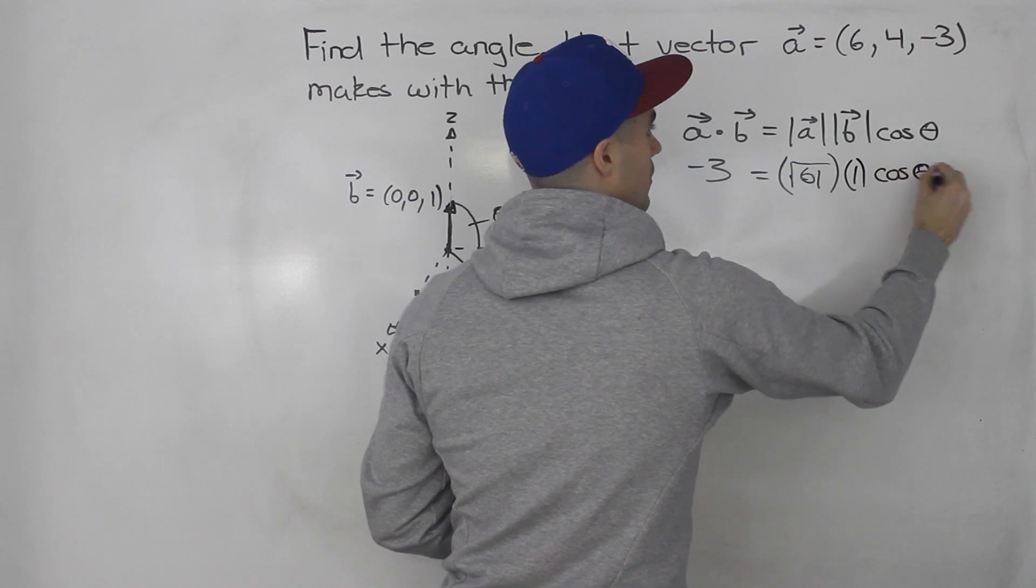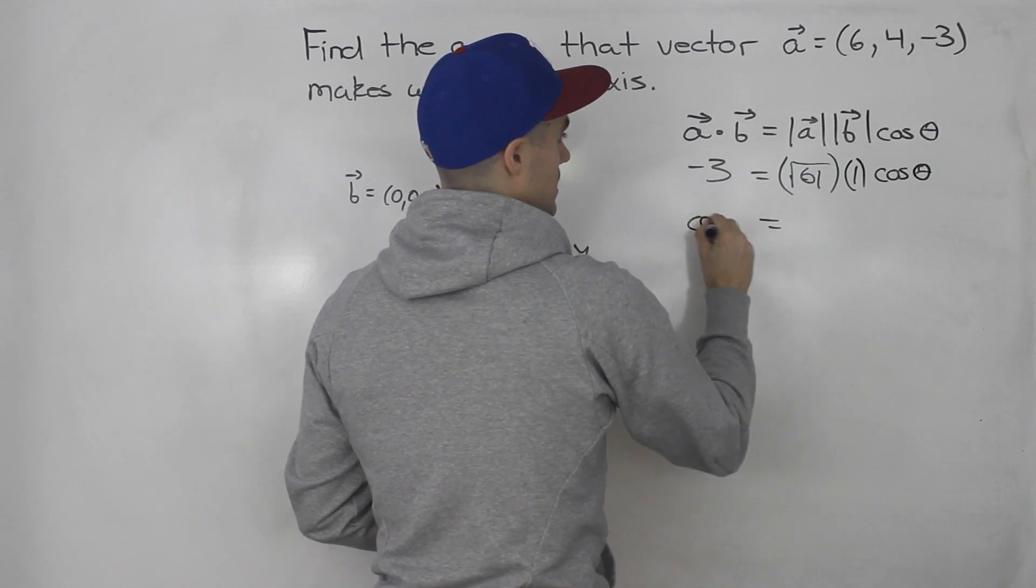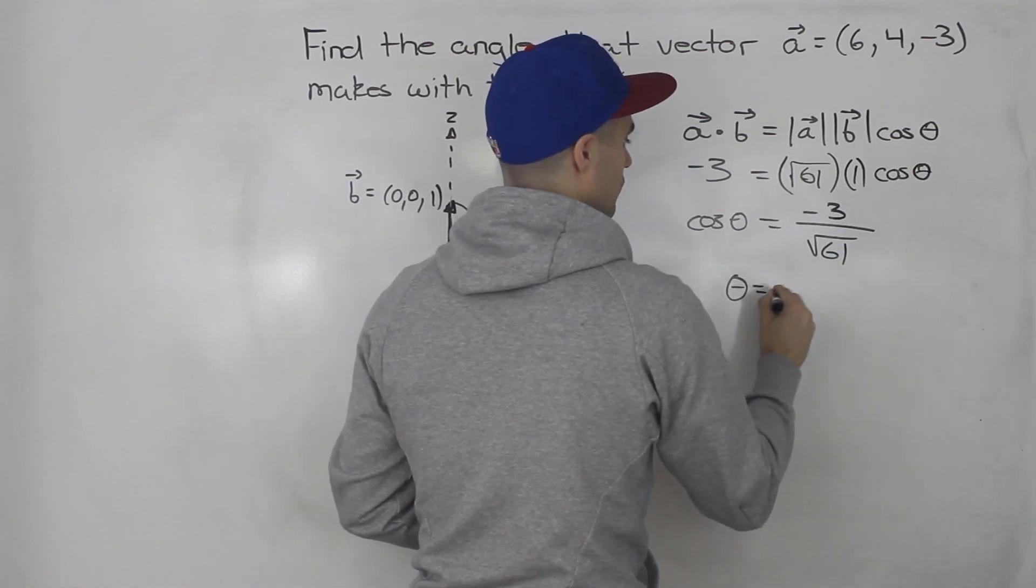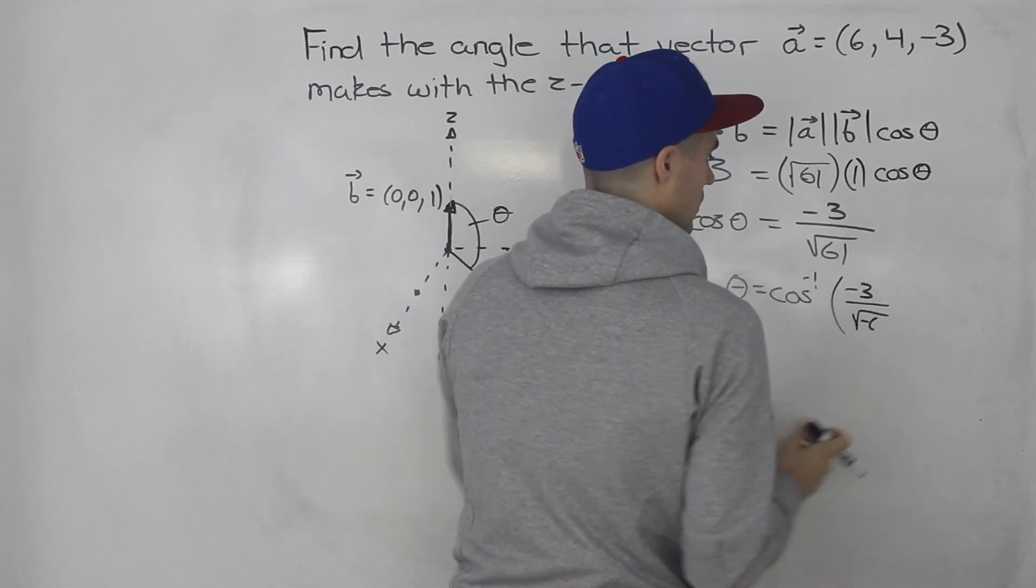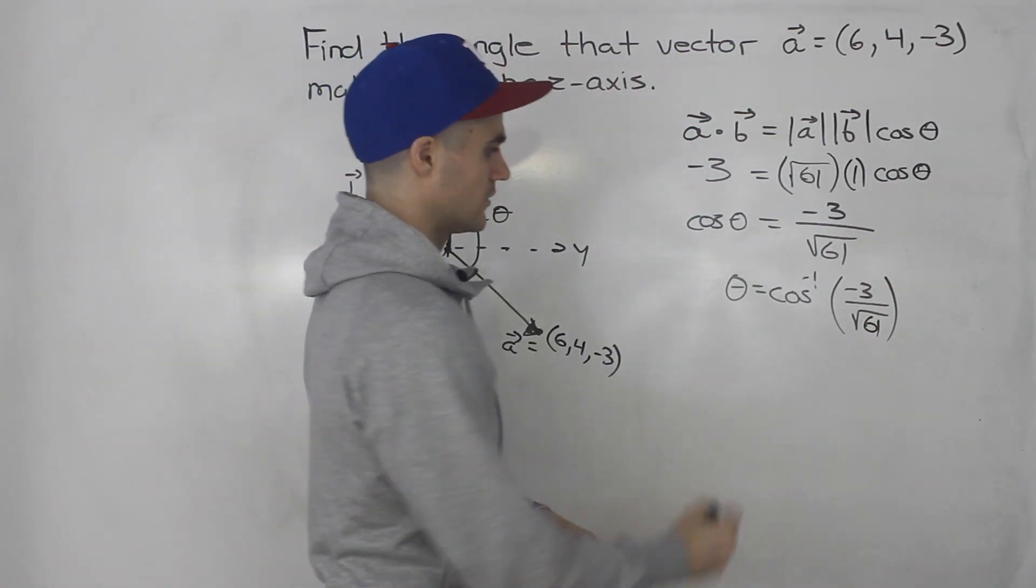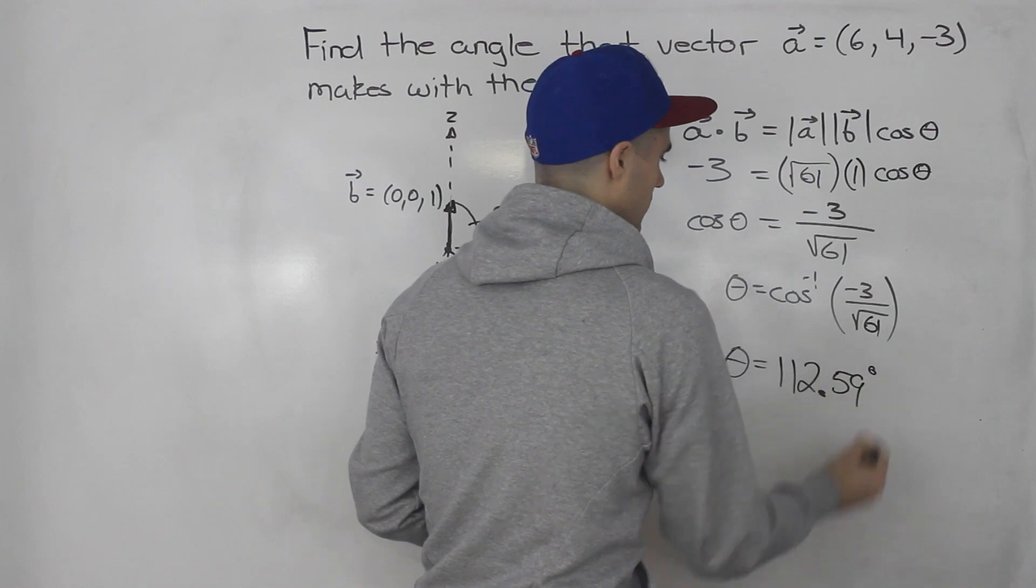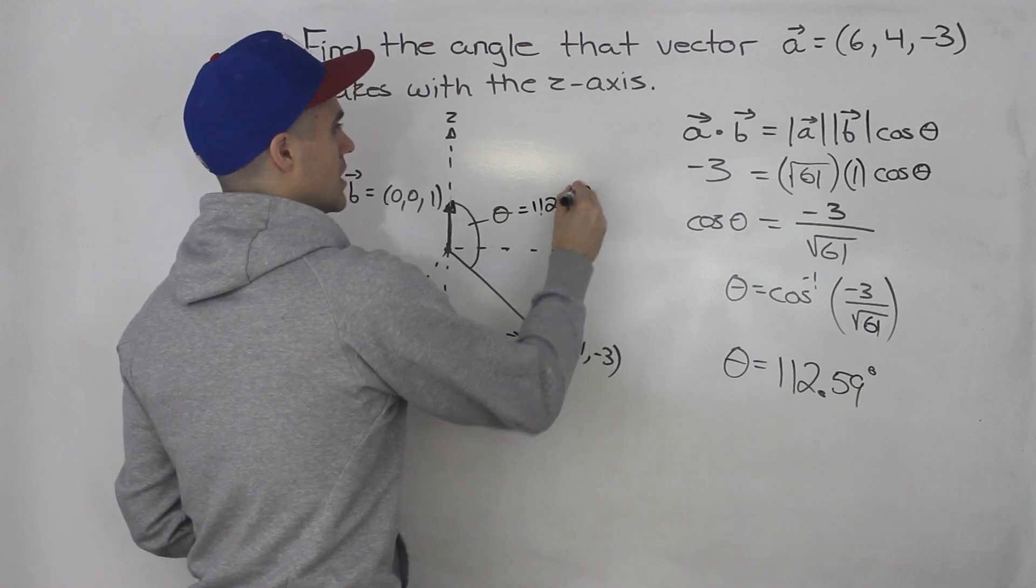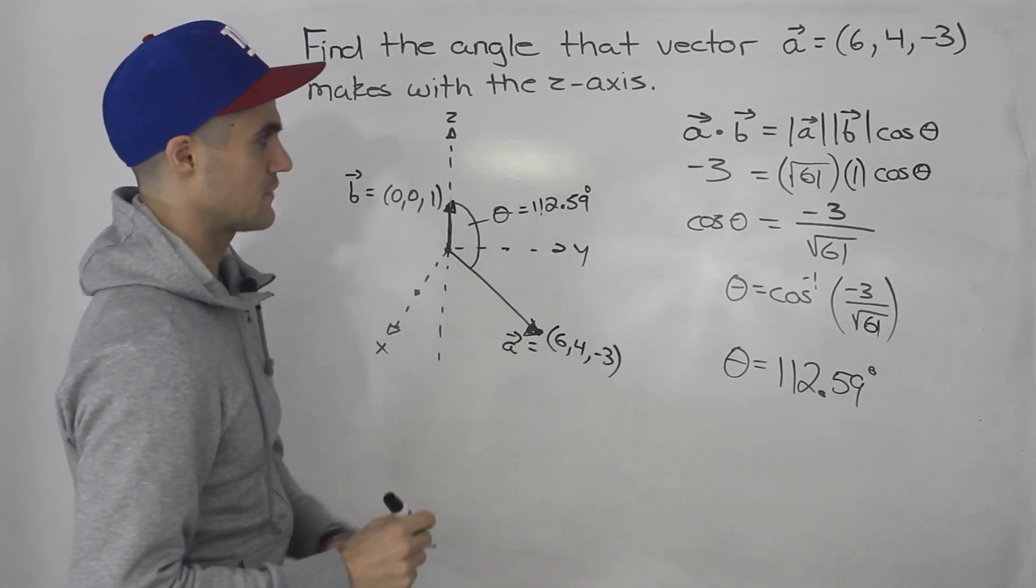And we're solving for that cos theta. So to isolate for cos theta, we got negative 3 over root 61. And then to solve for theta, we would just inverse cos that ratio right there, negative 3 over the square root of 61. And when you plug that in your calculator, you would end up getting 112.59 degrees. So that there is the angle between this vector and this vector or this vector and the z-axis. That's your final answer.